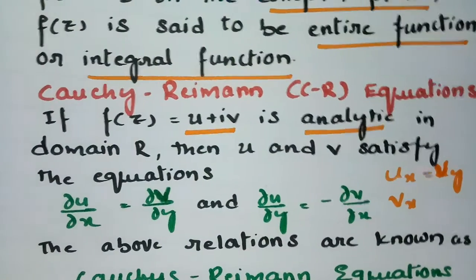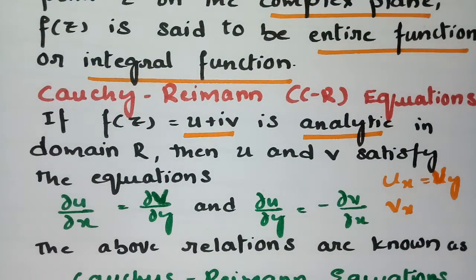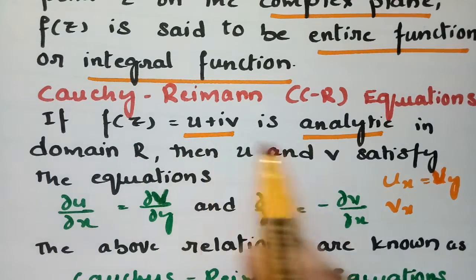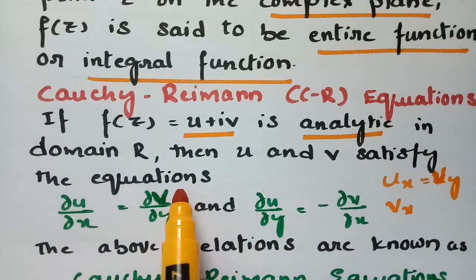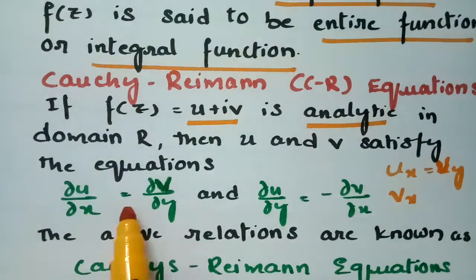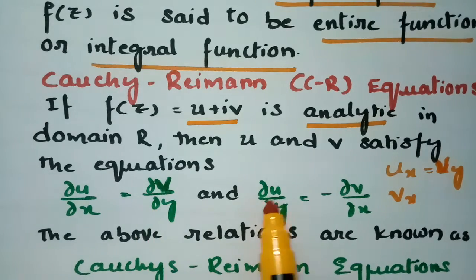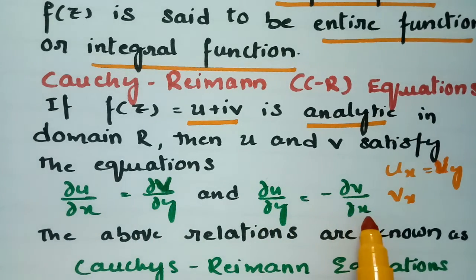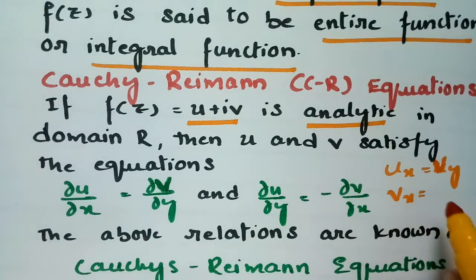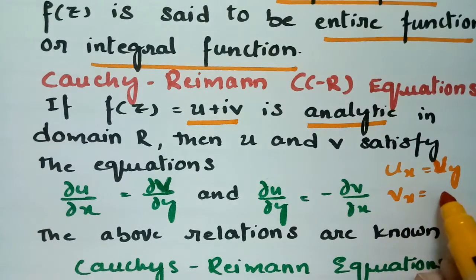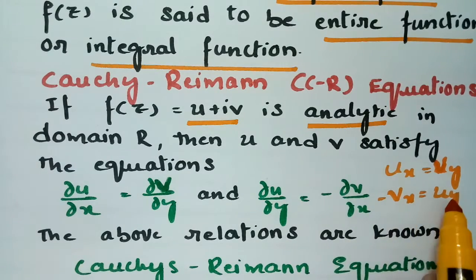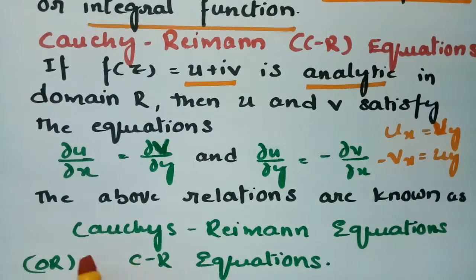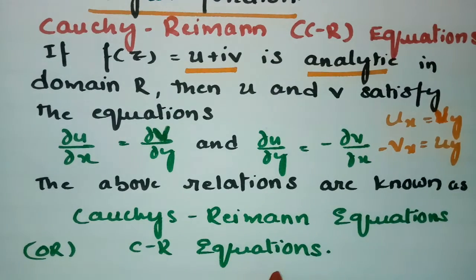Next, coming to the CR equations — Cauchy-Riemann equations. If f(z) = u + iv is analytic, then u and v satisfy the equations: ∂u/∂x = ∂v/∂y, and ∂u/∂y = −∂v/∂x. That is, u_x = v_y and u_y = −v_x. These are known as the Cauchy-Riemann equations or CR equations.